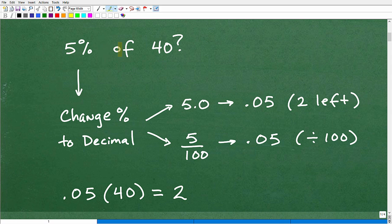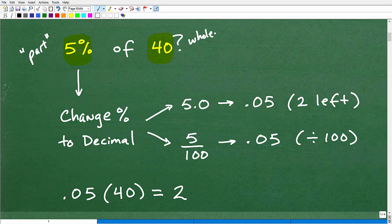Okay, so let's do this problem: 5% of 40. Now, conceptually, what are we looking for here? Well, obviously we're looking for 5% of 40. But really, when we're thinking about it, 40 is like the whole and 5% is the part. So conceptually, we're looking for some part of 40. That's what we just kind of know intuitively, right? And that's kind of what percent is.